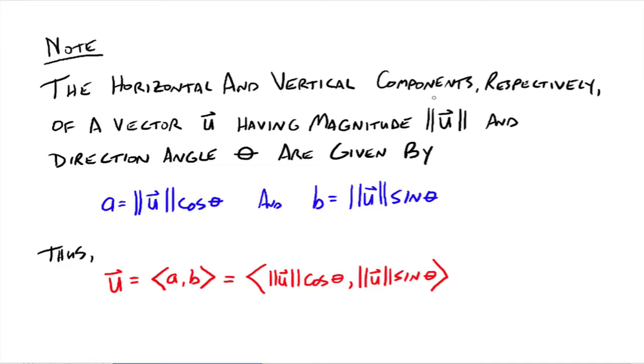The horizontal and vertical components, respectively, of a vector u having a magnitude and a direction angle θ are given by this. a is the magnitude of u times the cosine of θ—remember that's like the x part—and b equals the magnitude of u times the sine θ. That's like the y part.